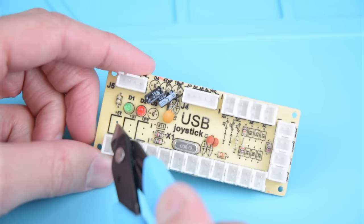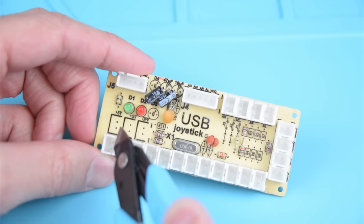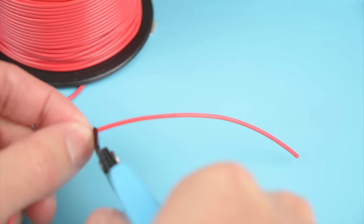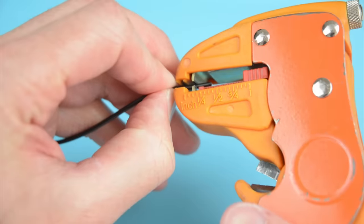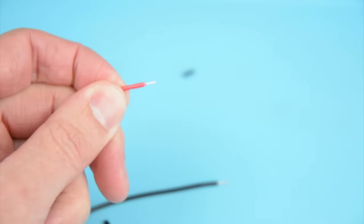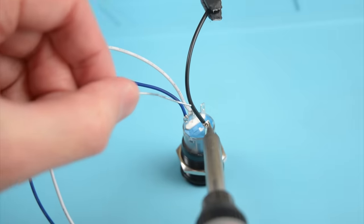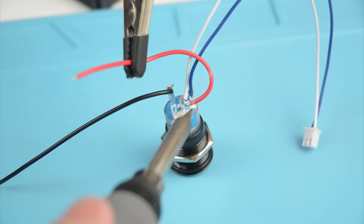On the USB encoder, we have two free spots where we can connect power for the LED which is inside the switch. For the wiring of the LED, cut two lengths of wire then strip the ends with wire strippers. Solder one black wire to the negative terminal on the switch and then solder one red wire to the positive terminal on the switch.